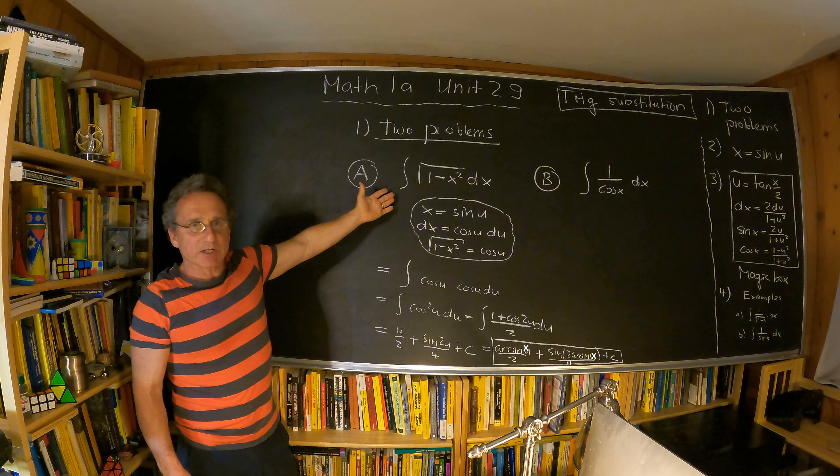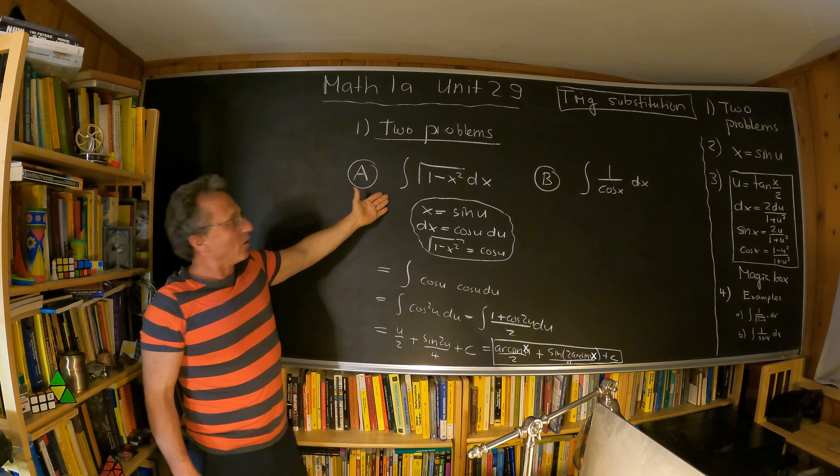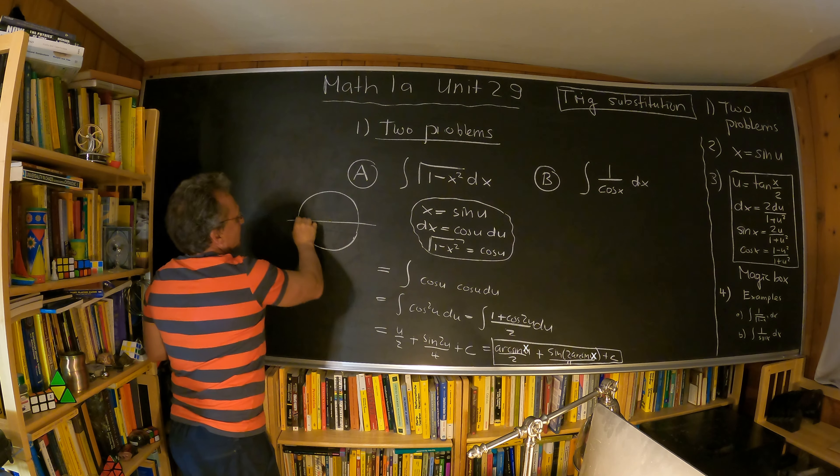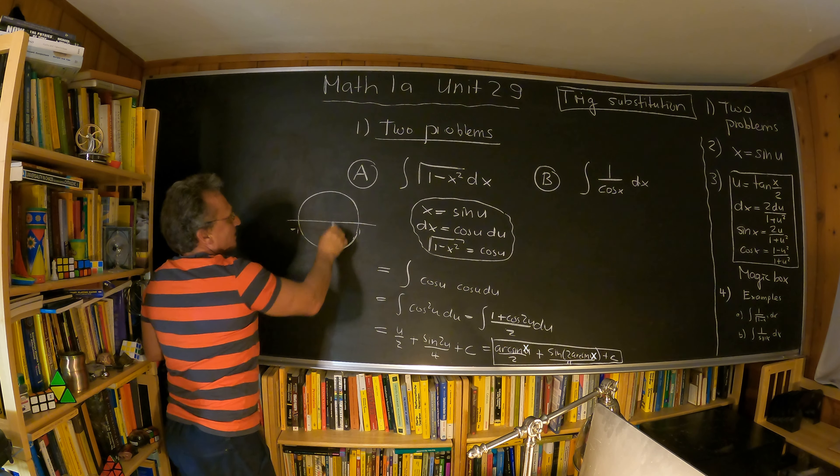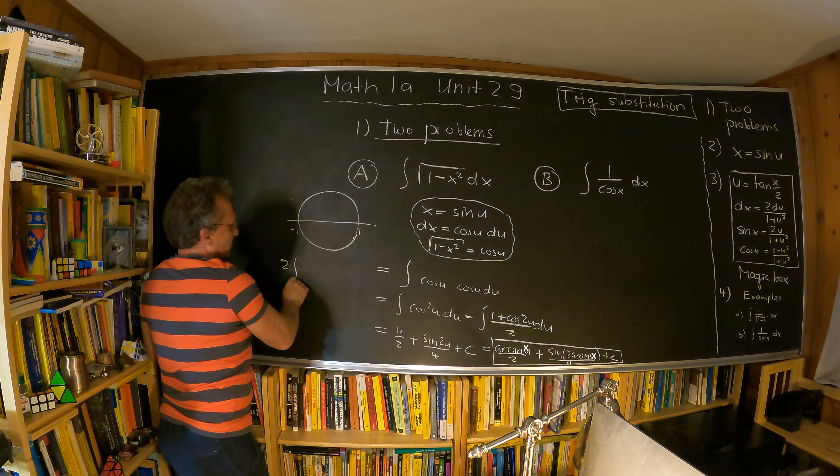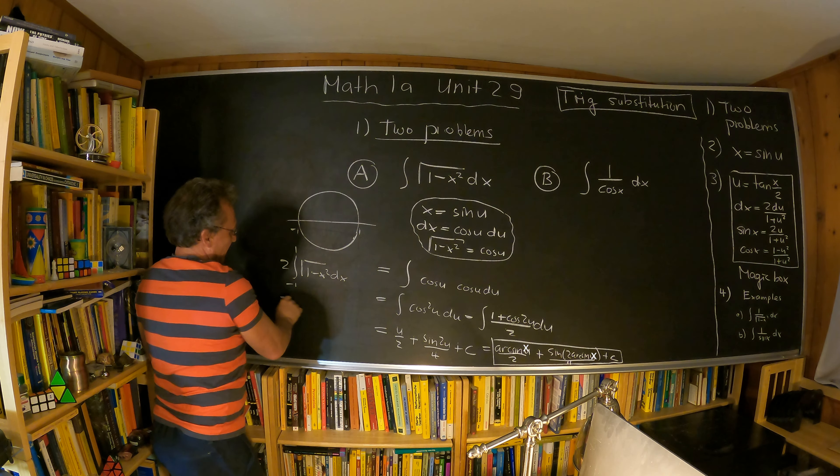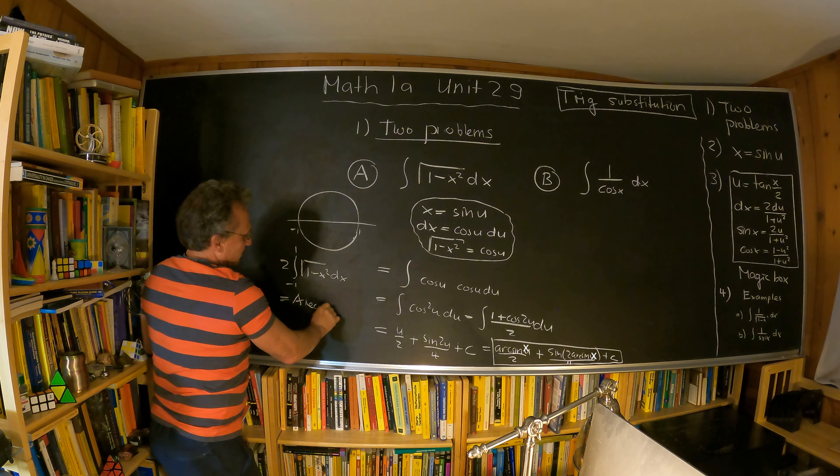So this is especially nice if you compute the definite integral. Like if you have a circle and two times the integral from minus one to one square root of one minus x square dx, this is the area of the circle.